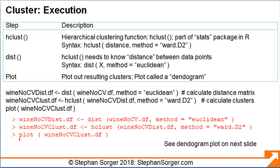To execute hierarchical clustering in R, we first compute the distance using the dist function. Here you can see that we calculate the distance using the Euclidean method, and place the result in a data frame we call wineNoCVDist.df. We then enter that data frame into the hClust function and use the Ward.D2 method to calculate the clusters, assigning the results to a data frame we call wineNoCVClust.df. We then plot out the results.